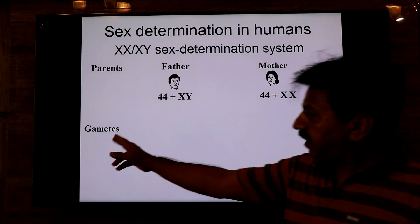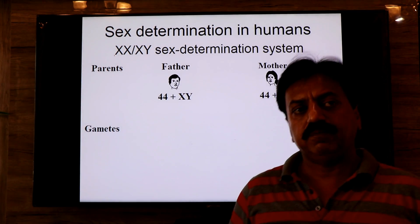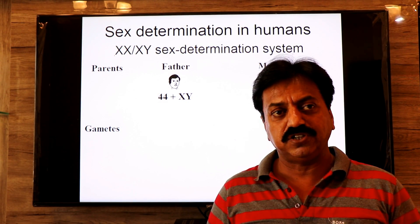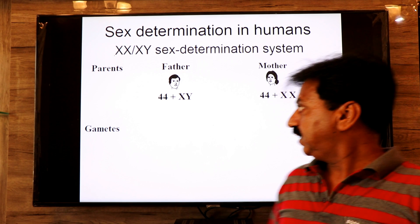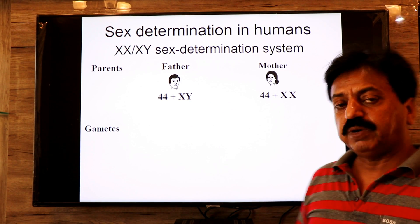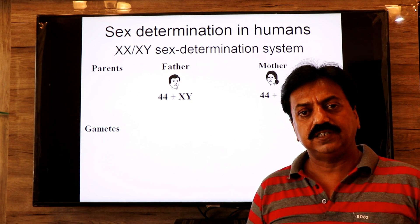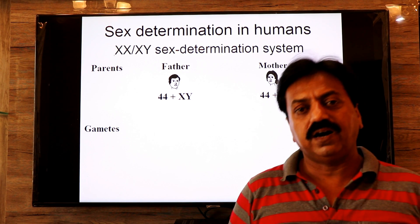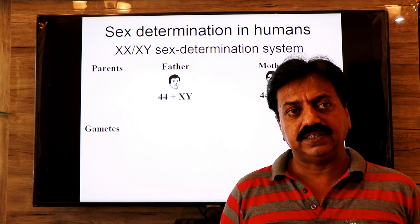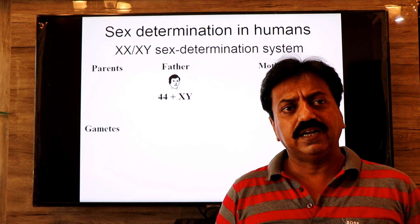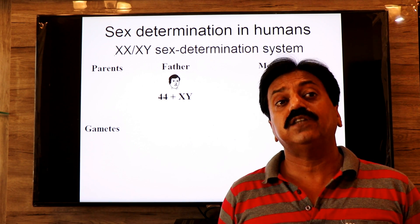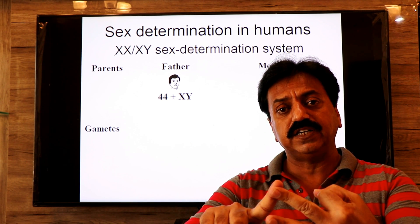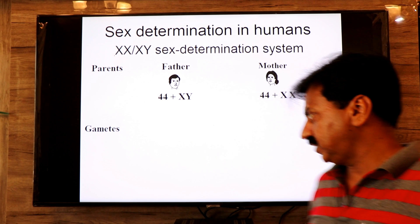Gametes are formed by a process known as gametogenesis. In the male, sperms are formed by spermatogenesis, and in the female, ova are formed by oogenesis. There are three phases of gametogenesis: the multiplication phase, growth phase, and maturation phase — and the maturation phase involves meiosis.